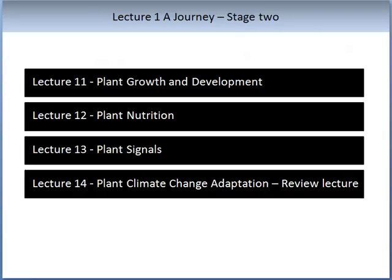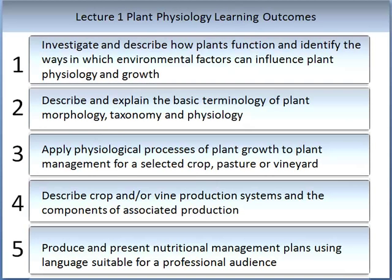In this lecture you will have an opportunity to test your understanding of plant physiology. There are five learning outcomes for this subject. The first three are the most essential: to investigate and describe how plants function and identify ways in which environmental factors can influence plant physiology and growth; to describe and explain the basic terminology of plant morphology, taxonomy, and physiology; and to apply physiological processes of plant growth to plant management of a selected crop, pasture, or vineyard.